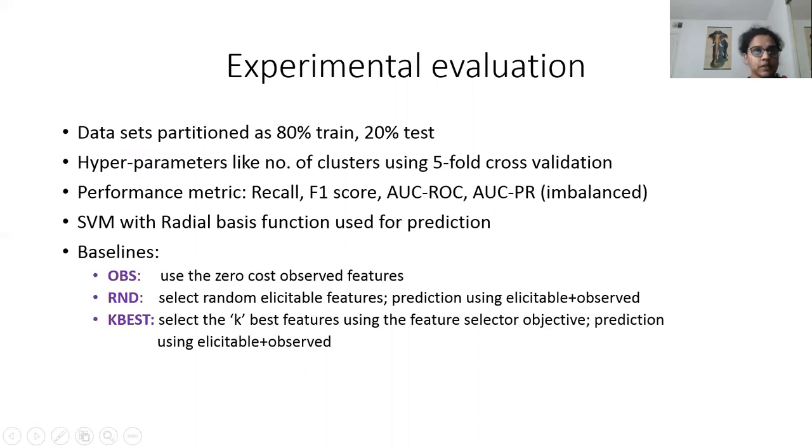Moving to experimental evaluation, datasets were partitioned into 80% train, 20% test. Hyperparameters of CAFE like number of clusters were tuned using five-fold cross-validation. Performance metrics we reported were recall, F1 score, AUC-ROC, and AUC-PR, because we used real-world medical datasets that are highly imbalanced. The underlying classifier was SVM with radial basis function.